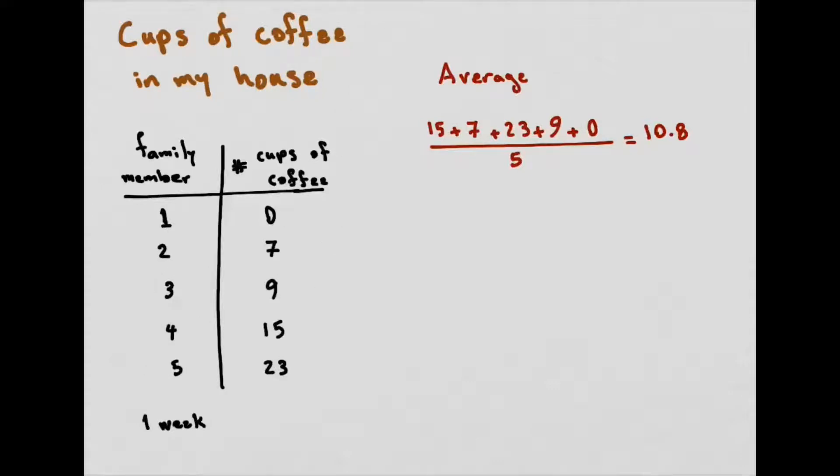So first, I'm going to forget who's drinking what and order my numbers from lowest number of coffee to the highest: 0, 7, 9, 15, 23. Another simple thing that I can record is the median. What is the median? It's the value of your middle entry. So I have five entries, so the third one would be the middle one. So my median is going to be 9.